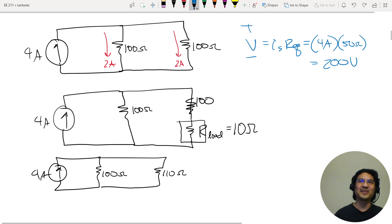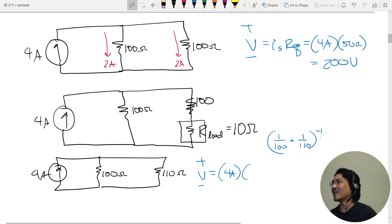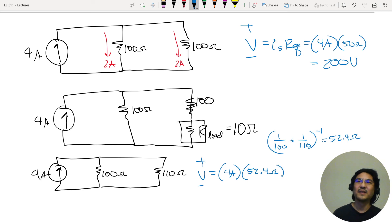So what does that mean for the voltage? I thought it was 200 over here, but now what is it? It's 4-amps times these in parallel. So 1 over 100 and 1 over 110, and then take the reciprocal. Let me punch that in the calculator. Okay, so it's 52.4. So then the voltage is about 210. So with no load, I was getting 200 volts across here, and then 2 amps here and 2 amps here. But by connecting a load to my circuit, I screwed everything up. It's no longer 200 volts across. It's now 210.